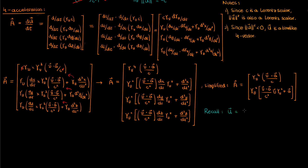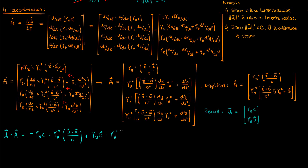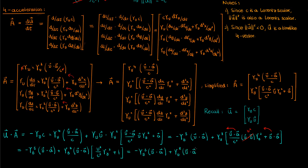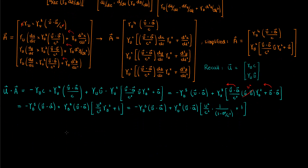Let me now copy in the velocity four vector to analyze the acceleration four vector. If we take the inner product of the velocity four vector and the acceleration four vector in Minkowski space, we get negative of the product of the first components plus the sum of products of the other three spatial components. The first term becomes negative gamma to the 5th times v dot a. After taking v dot a common from both terms and substituting gamma squared, we find that the dot product of the velocity four vector and the acceleration four vector is zero.